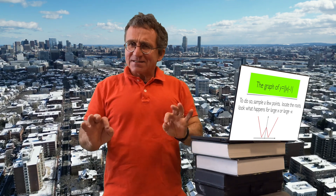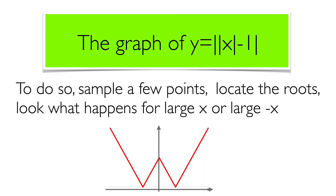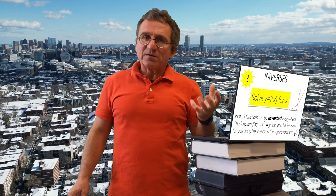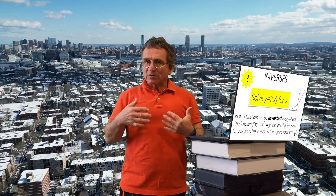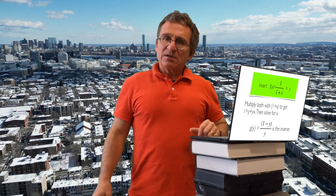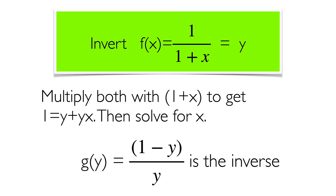It's not always easy to find the graph. One has to plot enough points, find the roots, and see what happens asymptotically. The inverse of a function plays an important role. For example, for the quadratic function, the inverse is the square root function. Finding the inverse often involves algebraic manipulation skills.